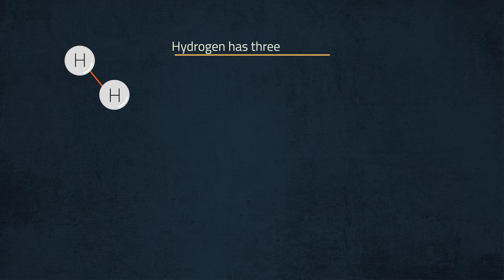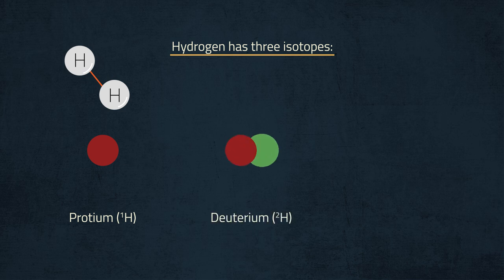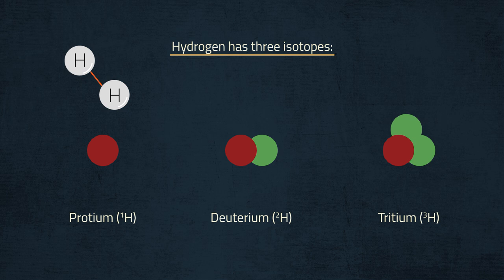Hydrogen has three isotopes: normal hydrogen with one proton in the nucleus, the very rare deuterium or heavy hydrogen with a proton and one neutron with twice the atomic weight of normal hydrogen, and the artificially made radioactive tritium with three neutrons.